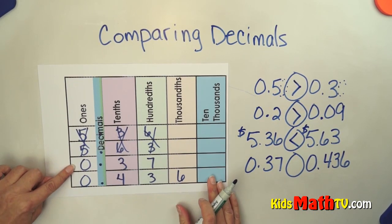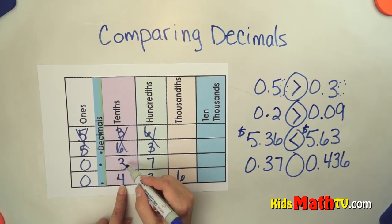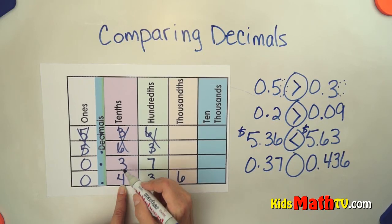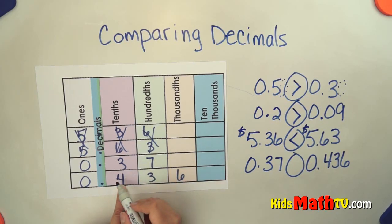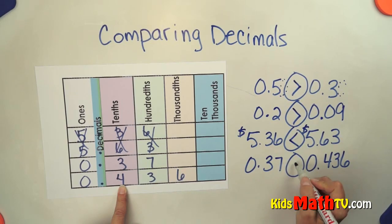The zeros and the ones are the same, so I go to the next number. The next place value is tenths. 3 tenths is less than 4 tenths, so 0.37 is less than 0.436 because the tenths are what we're comparing first, and 3 tenths is less than 4 tenths. And that's the end of our lesson on comparing decimals.